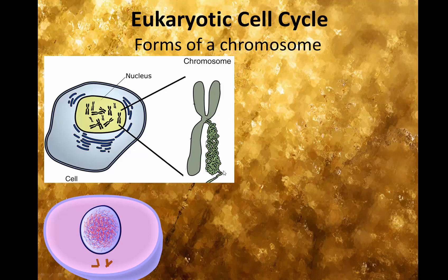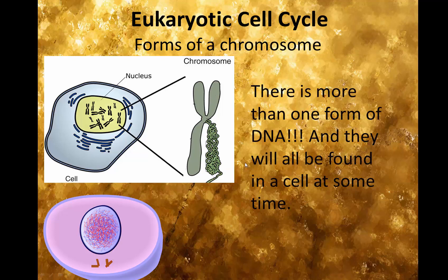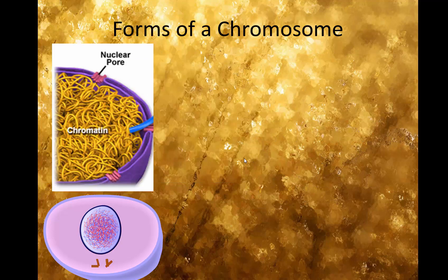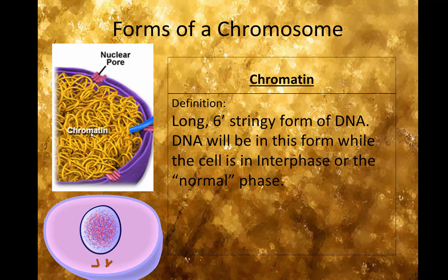The first form is a long chain, then it makes one half of an X shape, and then it makes the full X shape. They're all forms of DNA found in the cell at some point in time. Chromosomes found as a long chain are called chromatin. Chromatin are long strands — almost six feet long — and they almost look like spaghetti in this picture.